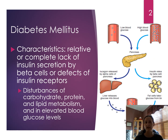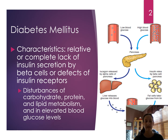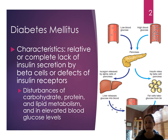Diabetes characteristics are twofold. Either there's a complete lack of insulin secretion by the beta cells of Langerhans in the pancreas, which is more characteristic of type 1 diabetes, or there's insulin resistance and defects of insulin receptors, as we commonly see in type 2 diabetes. While the focus is on aberrations of metabolism in carbohydrate, we also see patients with diabetes having protein and lipid metabolism errors because of hyperglycemia.